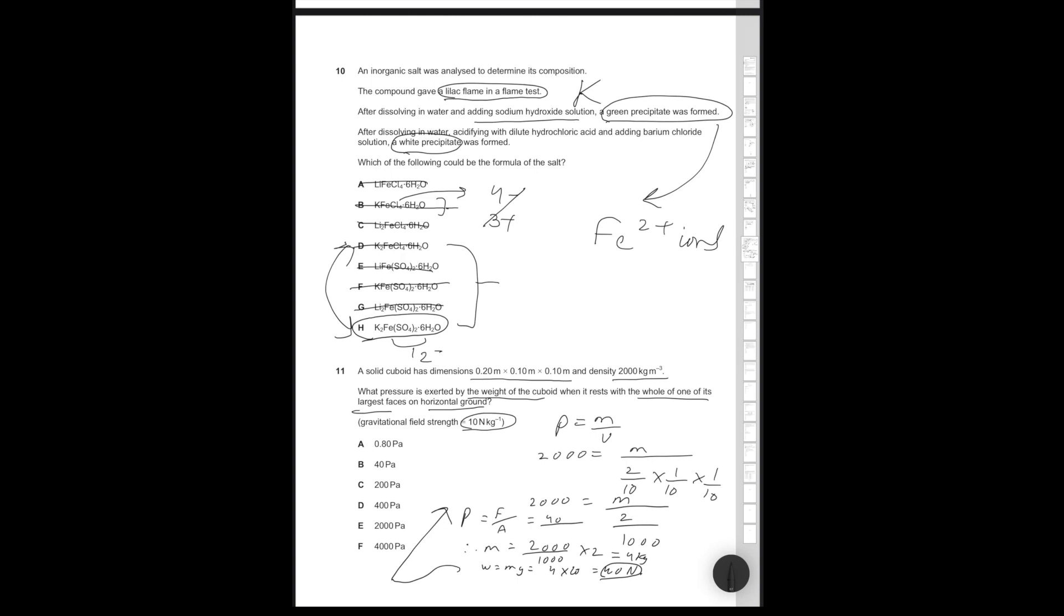Now, we can say that pressure is equal to force over area, which is equal to 40, and remember, it's the largest face. So 2 over 10 times 1 over 10, which is 2 over 100. Pressure is equal to 40 times 100 over 2, which is equal to 4,000 over 2, which is equal to 2,000 pascals. Therefore, the correct answer is going to be E. I've stuck to working in fractions, written down the key formulae I need to use, and I've manipulated the fractions in order to get the correct numbers.